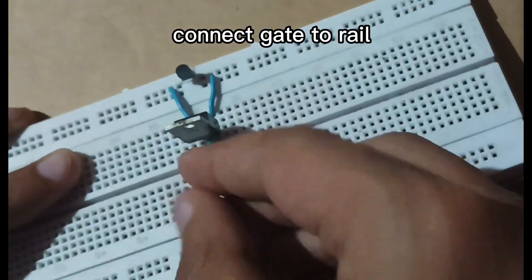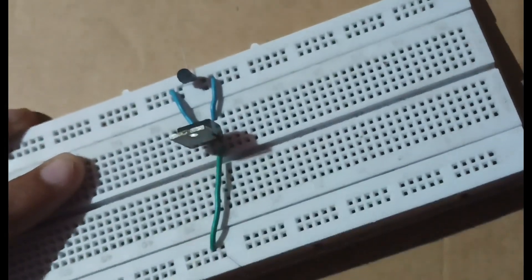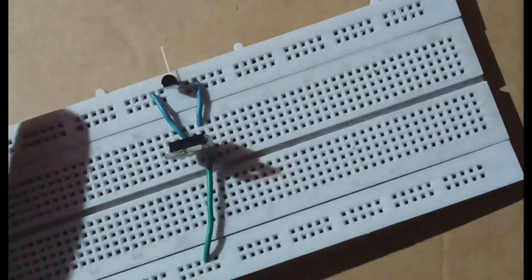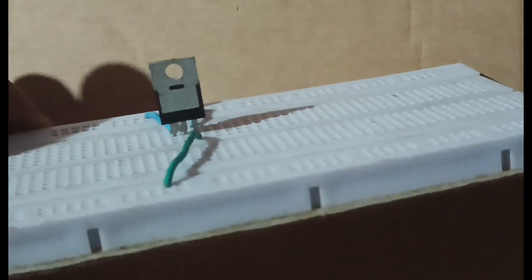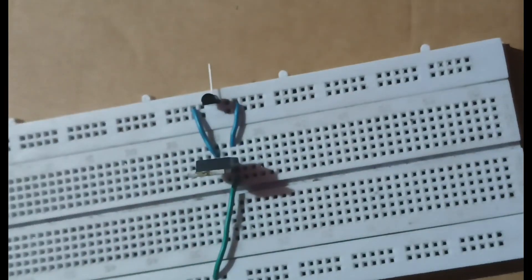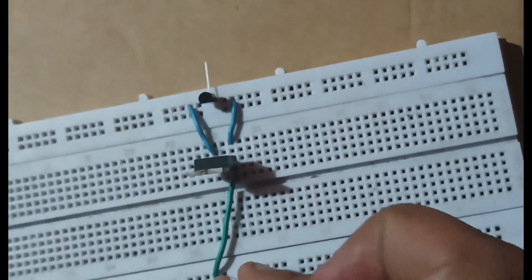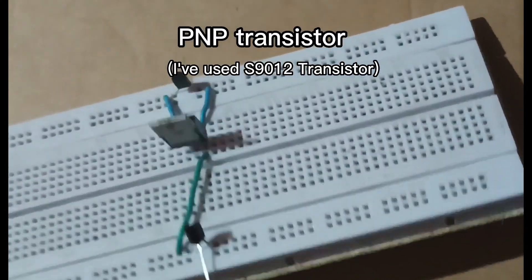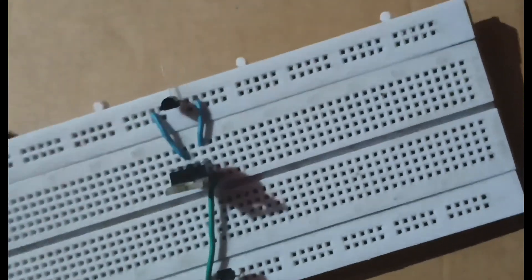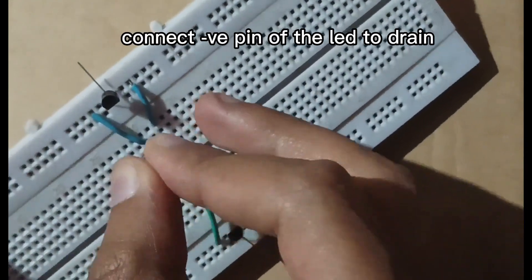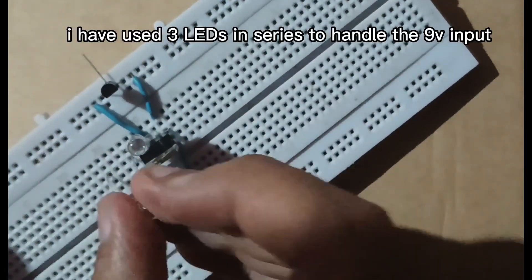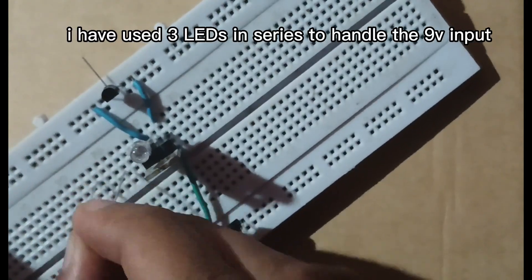Connect gate to rail. Connect the pin of the LED to drain. I have used three LEDs in series to handle the 9V input.